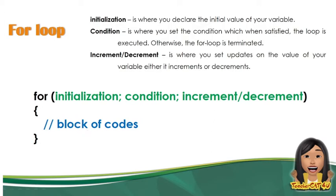Ang initialization is where you declare the initial value of your variable — siya yung starting point. The condition is where you set the condition which, when satisfied, the loop is executed. Otherwise, pag nag-false yung condition, yung buong for loop statement ay ma-te-terminate — hindi niya gagawin ang block of code. Then, ang increment and decrement is where you set updates on the value of your variable, either pataas (increment) o pababa (decrement).